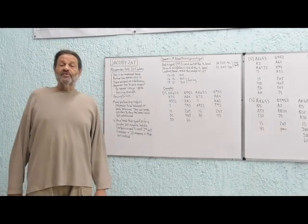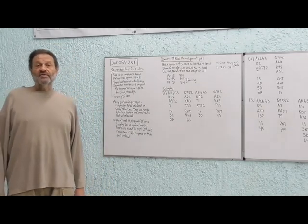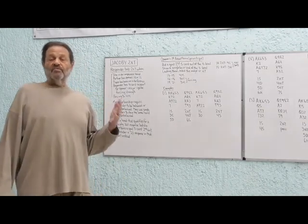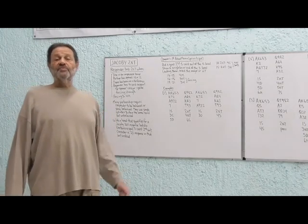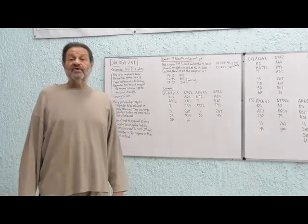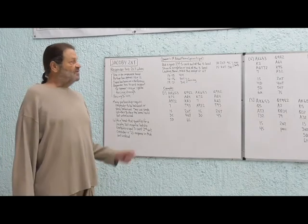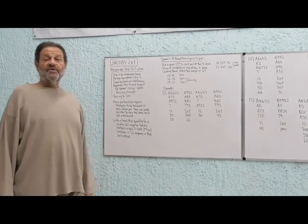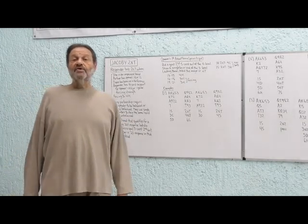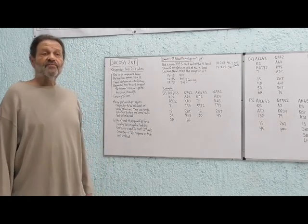Last week we discussed the Bergen raises, which are a series of raises of partners' major suit opening bid made with less than game-forcing strength and four-card support. Now what we're going to be talking about is how to raise partners' major suit opening bid with four-card support and game-forcing strength.